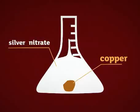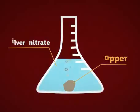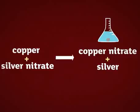Displacement reactions also occur in solutions. A piece of copper in a solution of silver nitrate will displace the silver out of the silver nitrate, producing copper nitrate and silver.